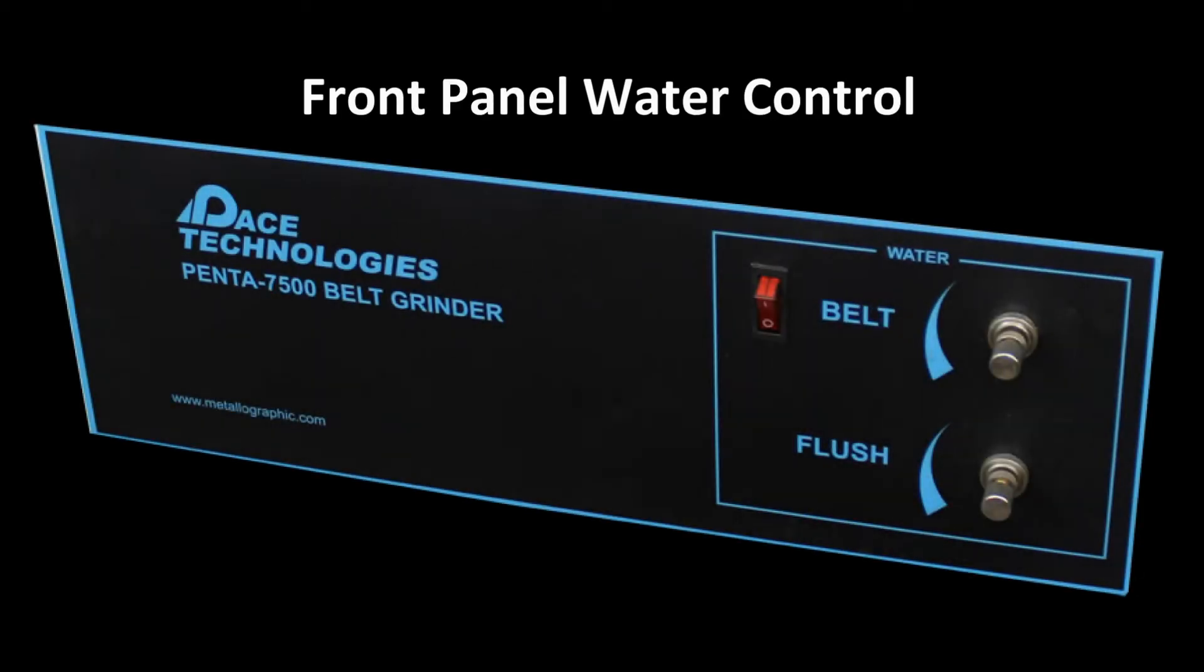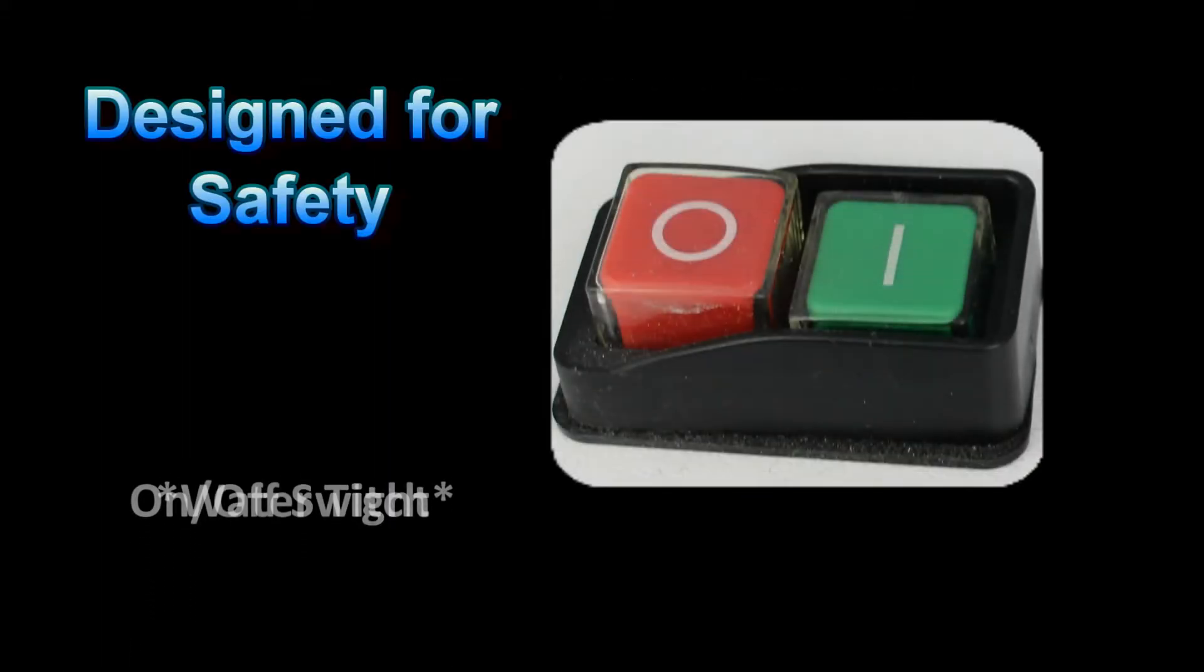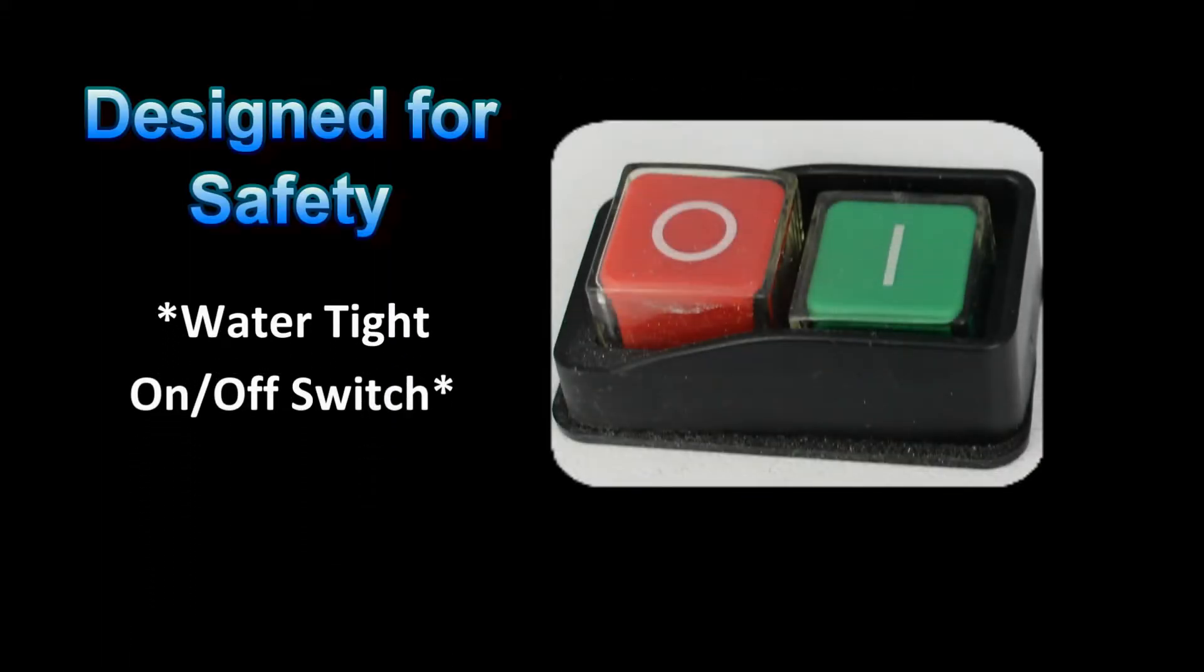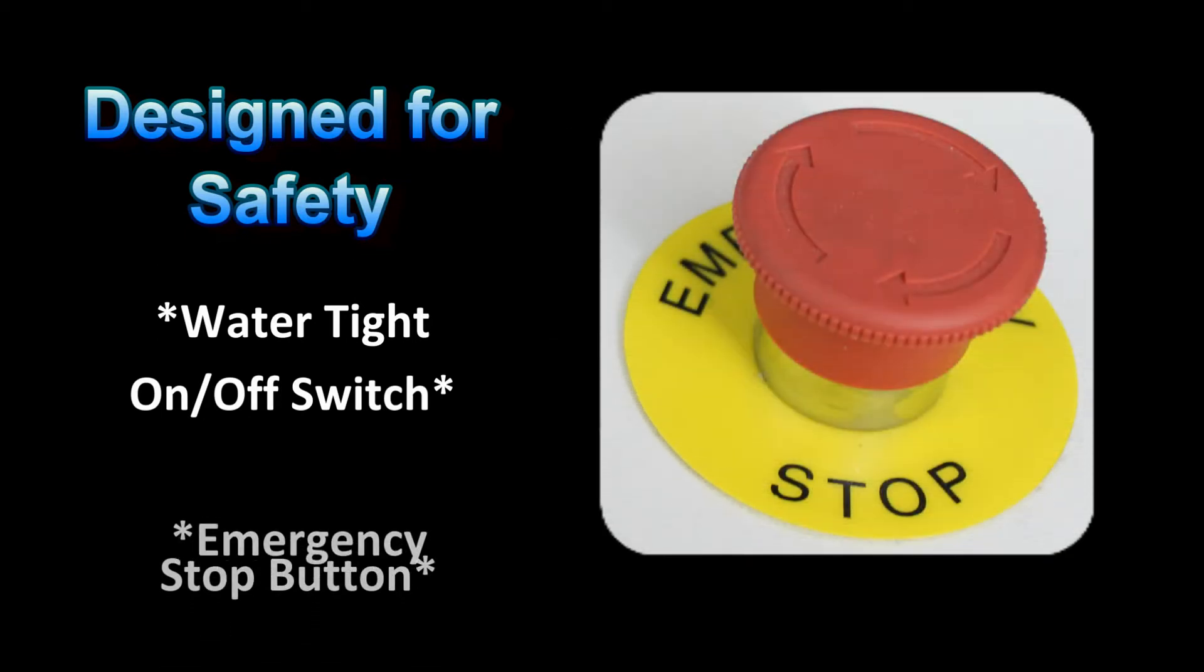The water flow to both the belt and the sink can be controlled from the front panel. The Penta 7500 has been built for safety with water-tight on-off switches and an emergency stop button.